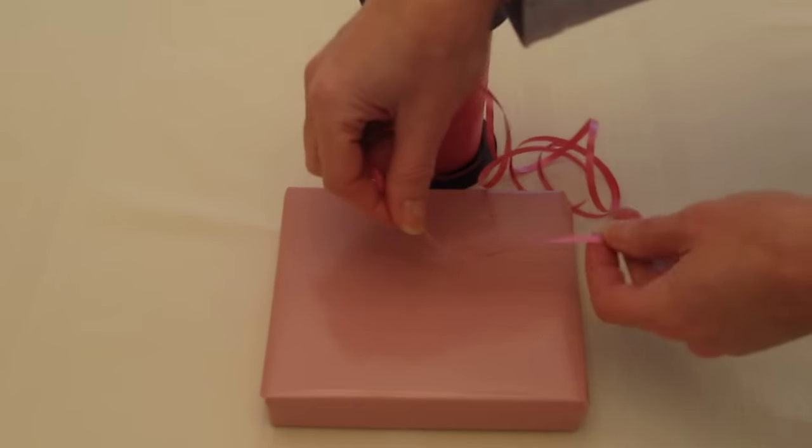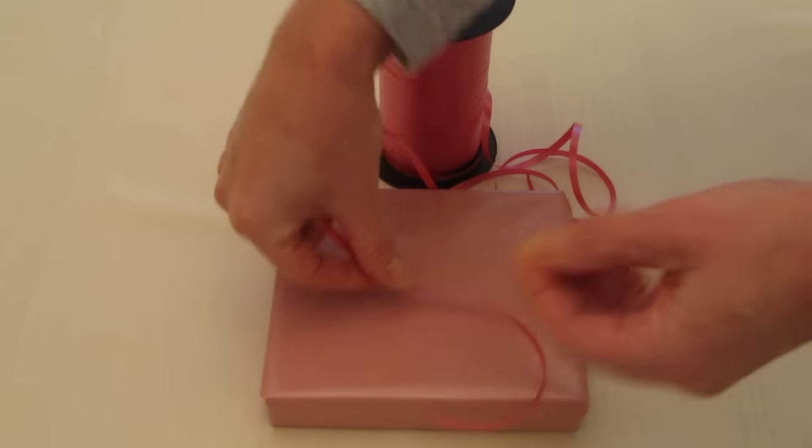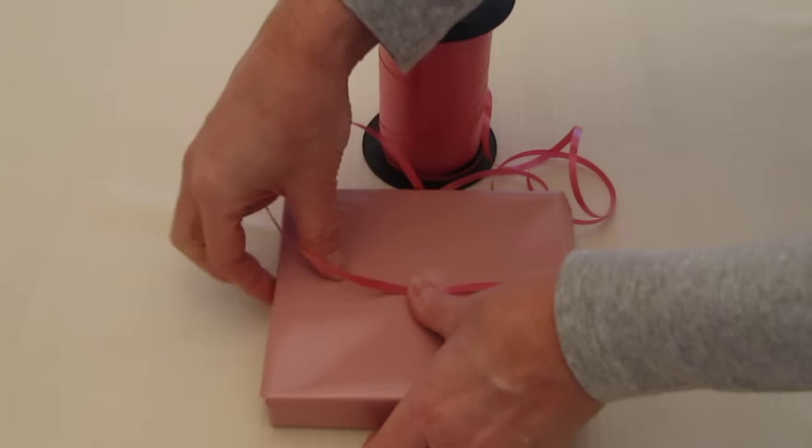To begin, we will take about five or six inches of ribbon and leave it loose. We'll put our thumb in the middle.